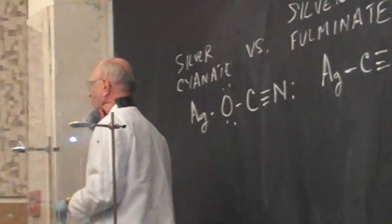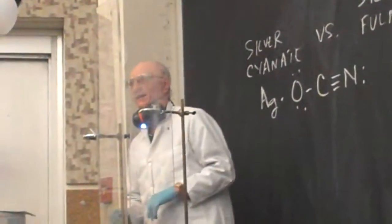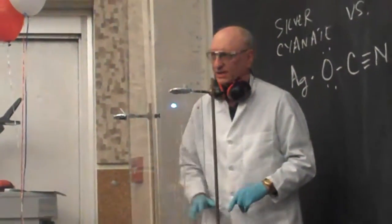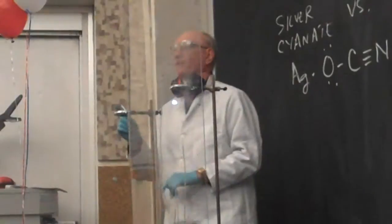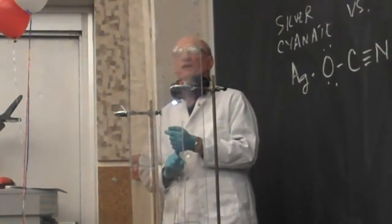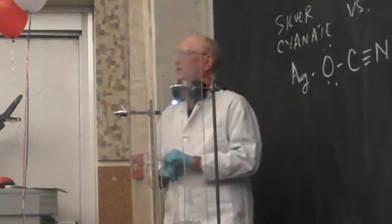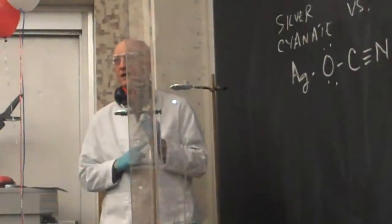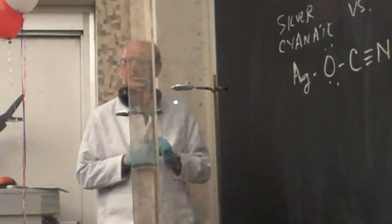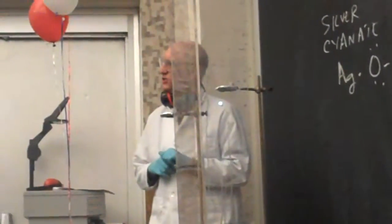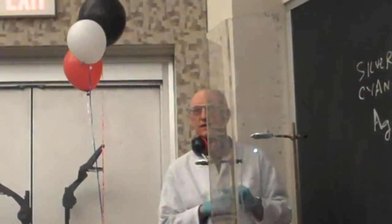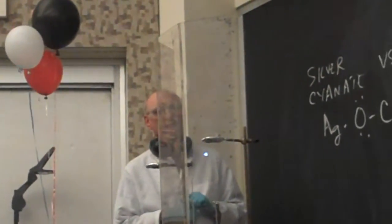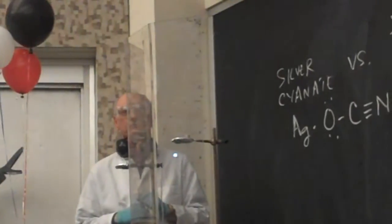What I want to do for you really quickly right now — I've been told I only have five minutes to do this — is one of the demonstrations that we usually do in first semester general chemistry, where we're discussing Lewis structures. So we have two compounds.